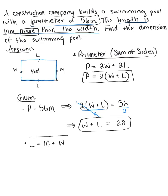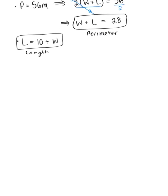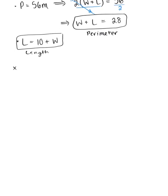We'll use these two equations, the length equation and perimeter equation, to solve for the dimensions. I'm going to substitute L = 10 + W into the perimeter equation, and then we can solve for W.